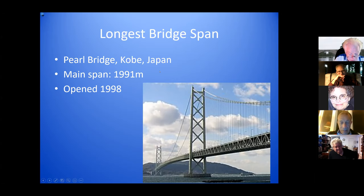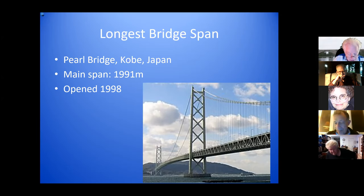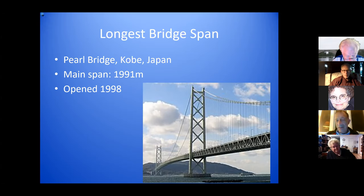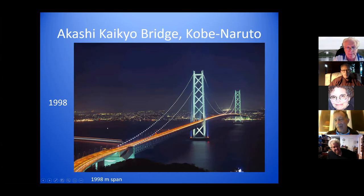This is the longest bridge span in the world — either 1,991 or 1,998 meters, depending on which source you use. It was built in 1998. That central span is longer than the Verrazano-Narrows Bridge at about 1,300 meters, the Golden Gate at 1,280 meters, and the George Washington Bridge at 1,067 meters. So it's the longest central span suspension bridge in the world.